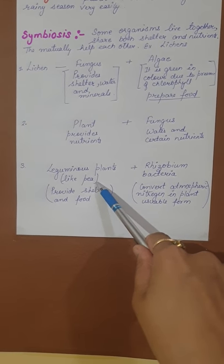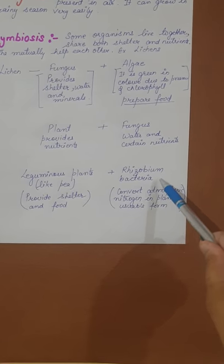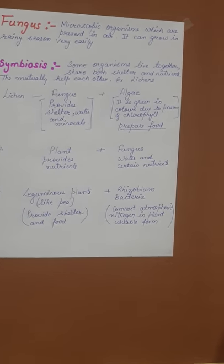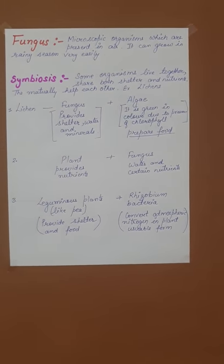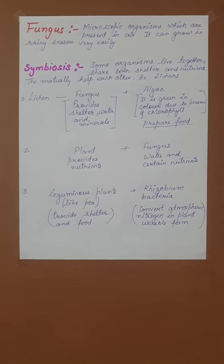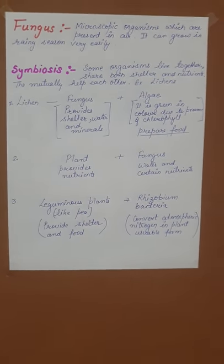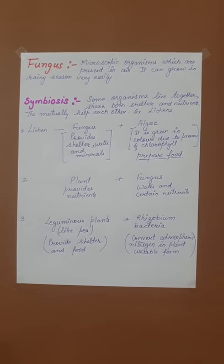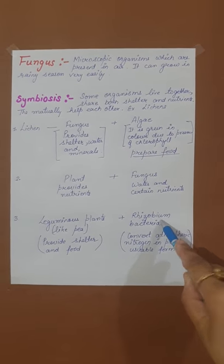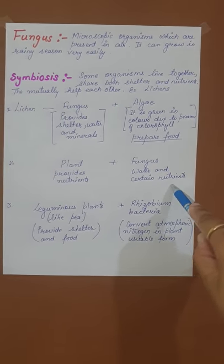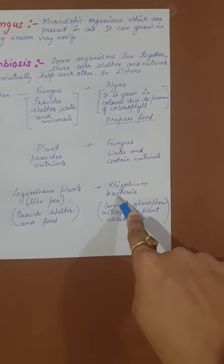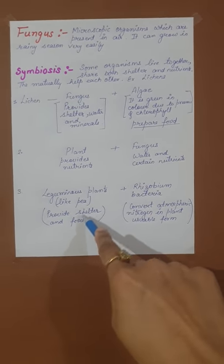The last example is leguminous plants like pea and rhizobium bacteria. Rhizobium bacteria is pink in color and very sensitive to light — when exposed to light, it dies. So to protect itself, it stays in the soil. It stays in the roots of plants and forms a colony there, making a nodule to survive.